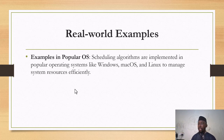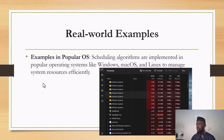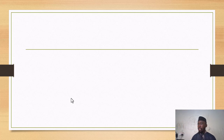A good real-world example: scheduling algorithms are implemented in popular operating systems like Windows, Mac OS, and Linux to manage resources efficiently. That image tries to portray CPU utilization — a number of tasks are running and the CPU is at almost 42%, while memory is at almost 31%.